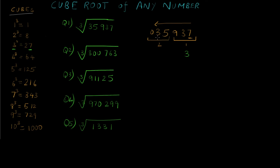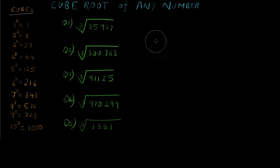For the second group we have the number 35. We need to find the cube value that is less than and closest to 35. That is 27, which is 3 cubed. So the second digit is also 3, and there you go — the answer is 33. If you calculate 33 cubed you'll get 35937.